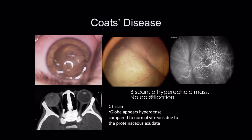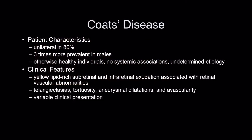On ultrasound scan, you see a hyperechoic mass but no calcification. On CT scan, you can see a hyperdense globe compared to the normal vitreous, because of protein exudation. But we don't often do CT scans in kids — we prefer MRI scans these days.